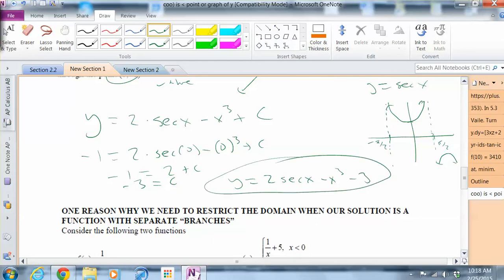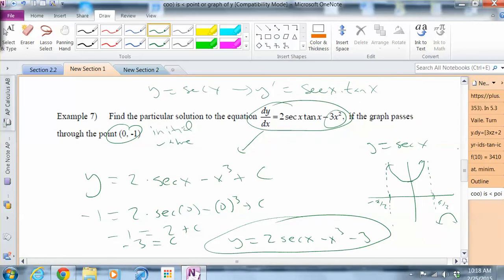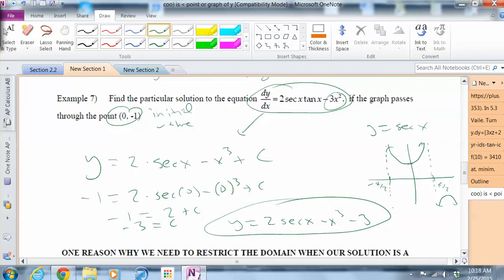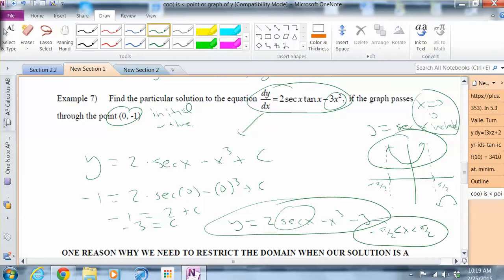So our equation will be 2 secant x minus x cubed minus 3. However, we do have to take into consideration our domain because we're including the point zero negative one. So we do have some sort of discontinuity. Remember, when you're not continuous, you're not differentiable either. So we have to be careful of how we state our final answer. We're clearly interested in this branch because x equals zero is included. And secant x is part of our answer. So you kind of have to remember some of the natural domains for some of these trig functions, which we can totally review at a little later time. So that's example seven.